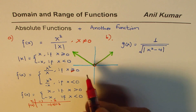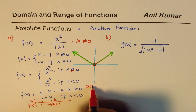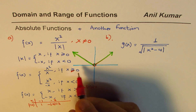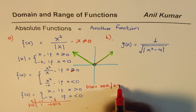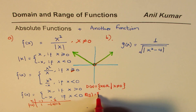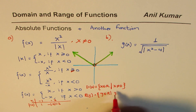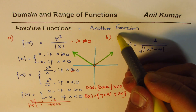So the domain of this function is: x belongs to real numbers where x is not equal to 0. And the range for this function is: y belongs to real numbers where y is greater than 0. That is the domain and range of this particular function.